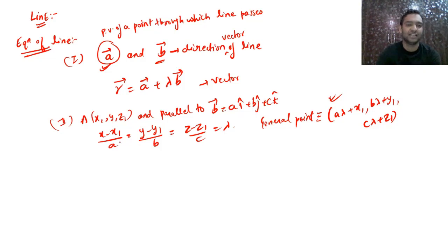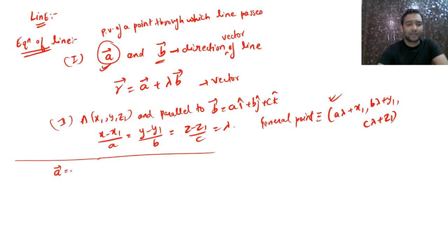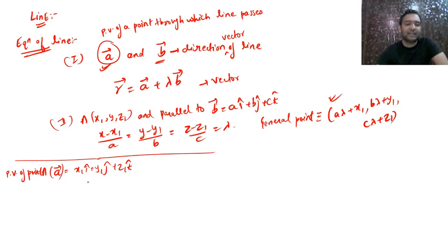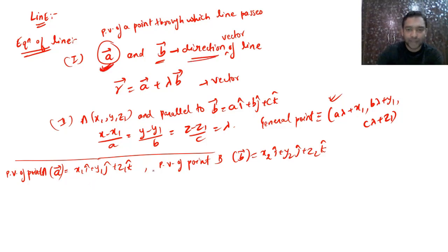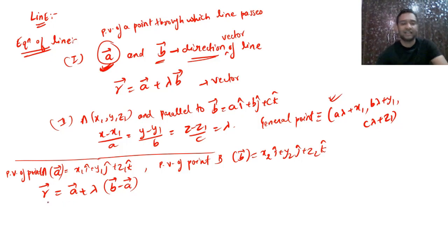The second type: if two points are given through which the line passes. Let **a** = x₁î + y₁ĵ + z₁k̂ be the position vector of point A, and **b** = x₂î + y₂ĵ + z₂k̂ be the position vector of point B. To write the equation of a line we need a point and a direction vector. With two points we have both, so the direction vector is (**b** − **a**), giving us the two-point form of the equation.